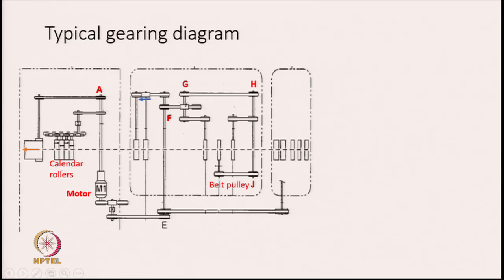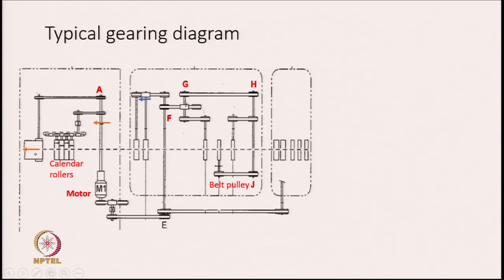This arrow shows the direction of delivery of the machine. These are the calendar rollers. Here is a motor. We can see the way the motion flows — one single motor driving so many elements. From here the motion flows to the calendar rollers as well as to the lap forming unit.